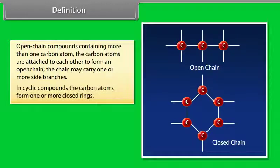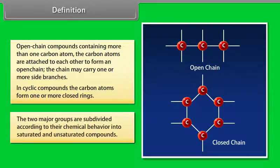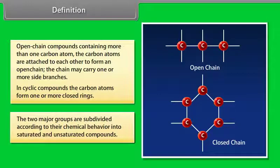The chain may carry one or more side branches. In cyclic compounds, the carbon atoms form one or more closed rings. The two major groups are subdivided according to their chemical behavior into saturated and unsaturated compounds.